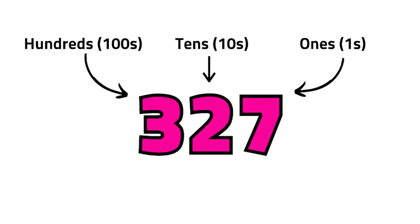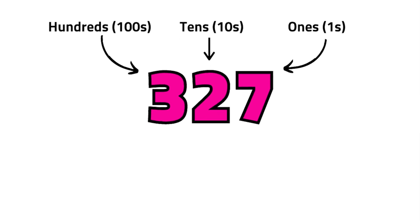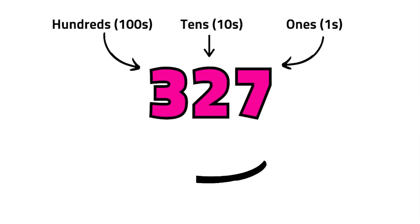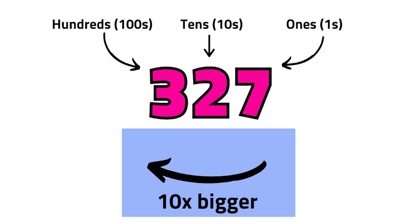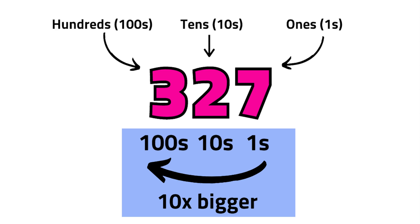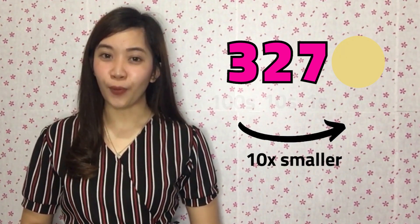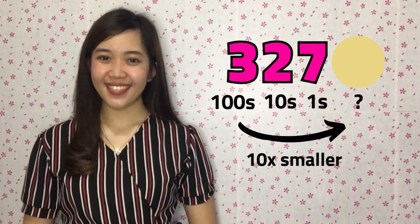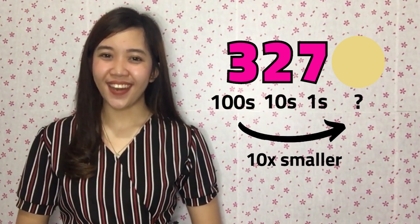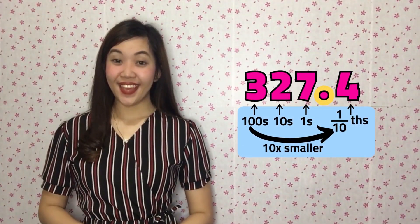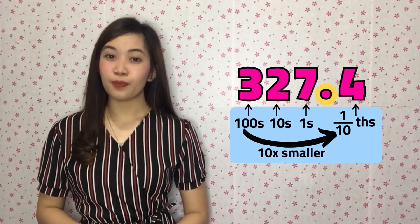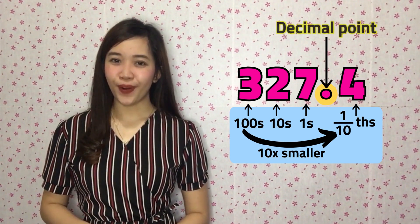What did you notice? As we move to the left, each place value is 10 times bigger, and as we move to the right, each place value is 10 times smaller. But what if we continue moving past the 1s? Do you know what is 10 times smaller than 1s? 1 over 10s! Remember this, kids: to know exactly where the 1s position is, put a decimal point first.